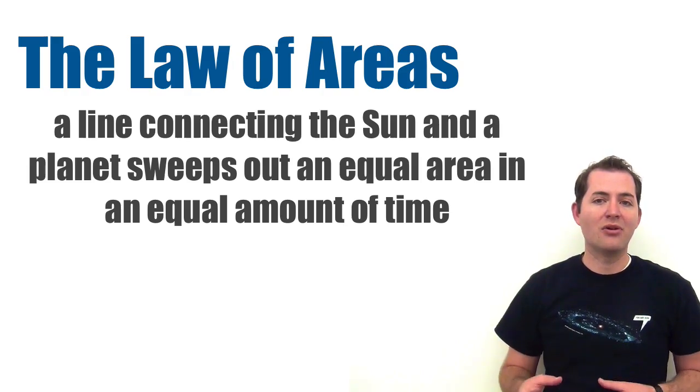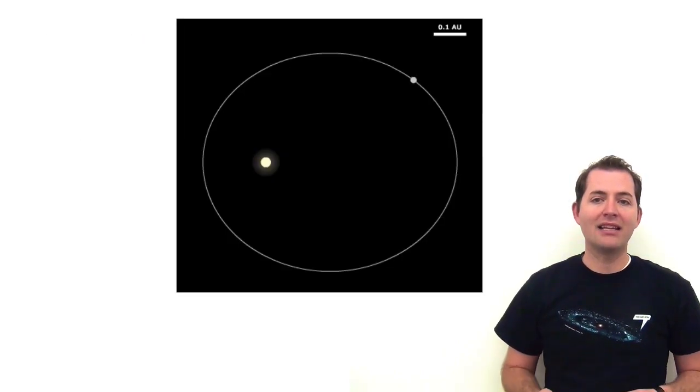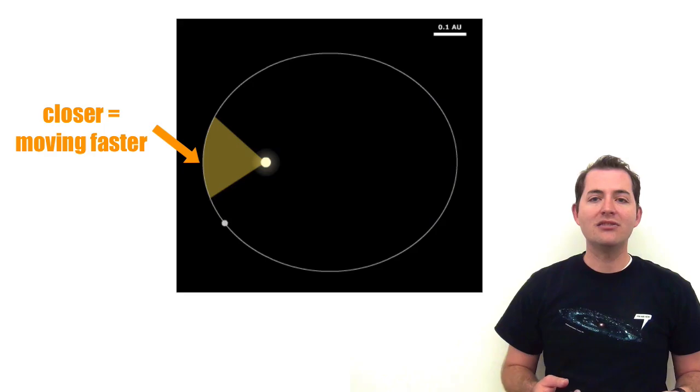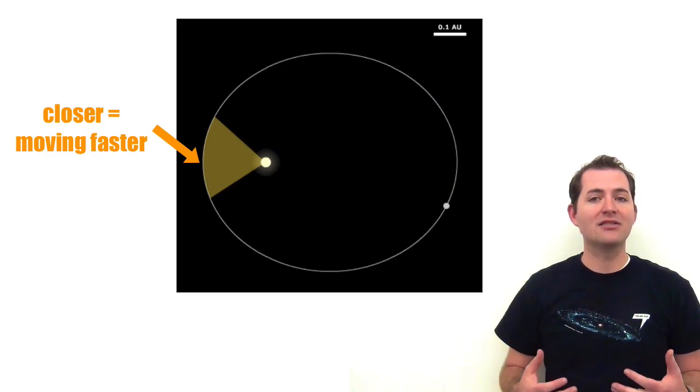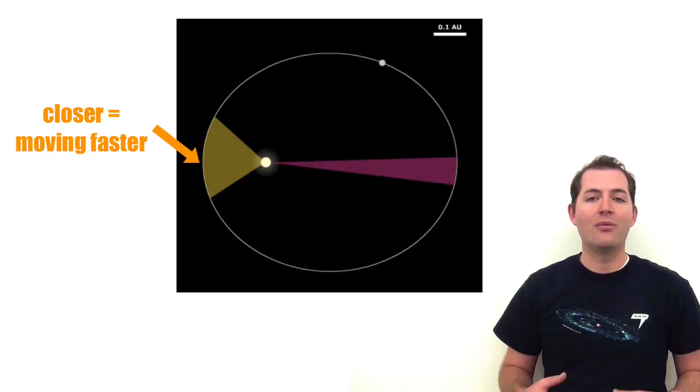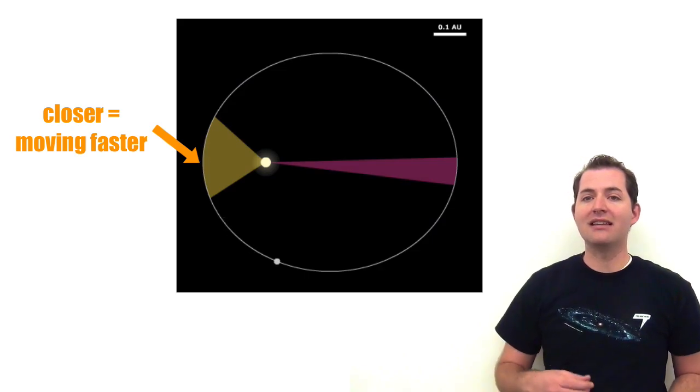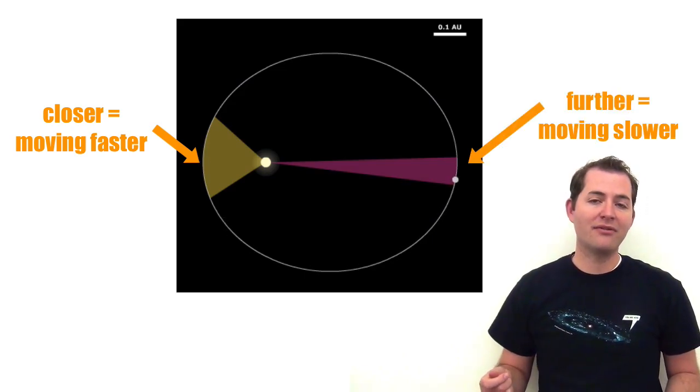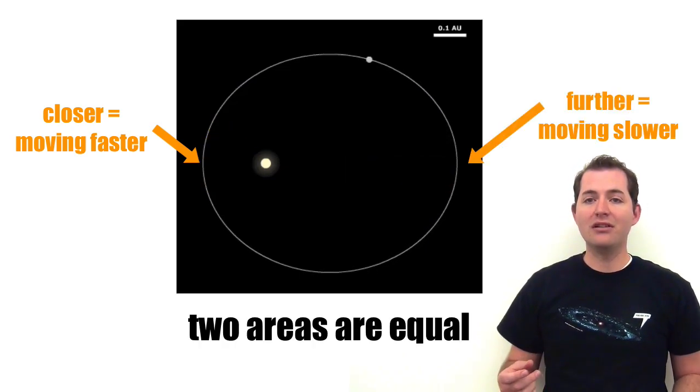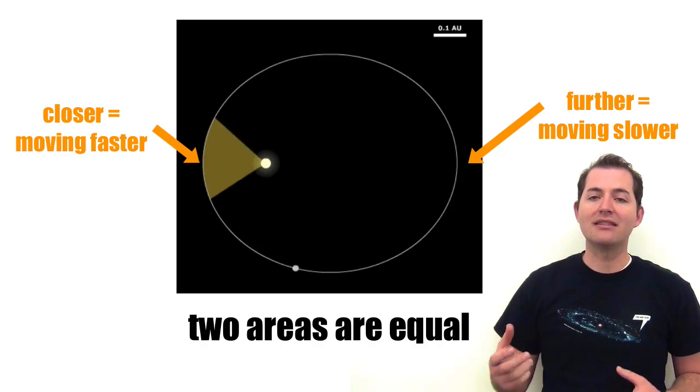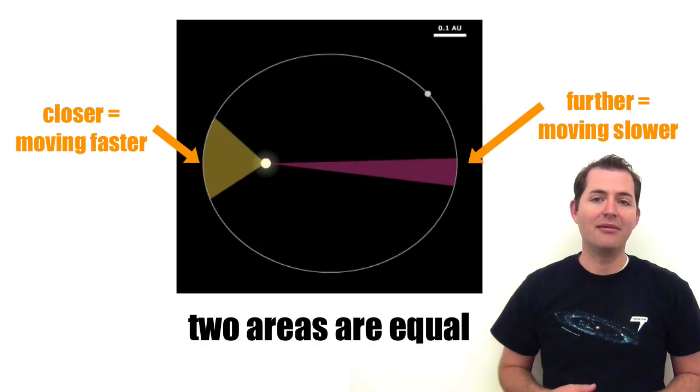Now, let's look at this definition a little more closely. If we have a planet that's close to the sun, it's going to be moving faster and it's going to sweep out a particular area. What Kepler's Law of Areas says is that that same planet, when it's farther away from the sun, will be moving slowly and will still sweep out the same amount of area in the same amount of time.